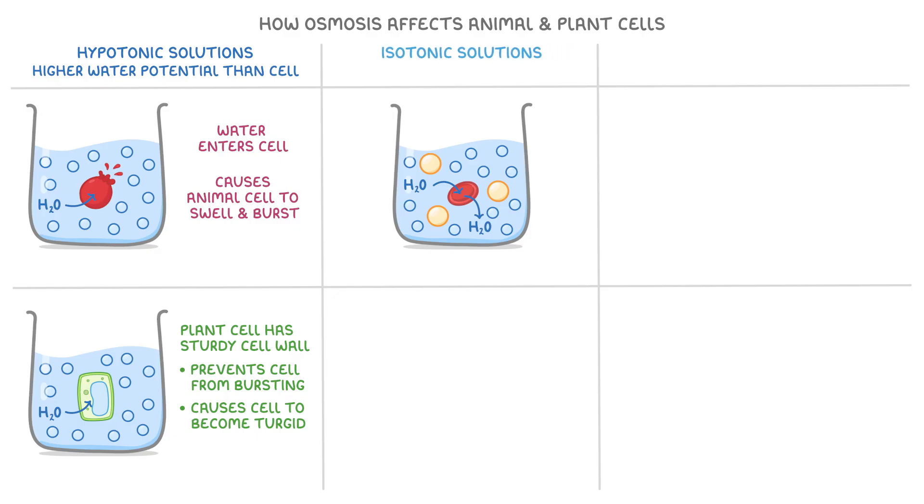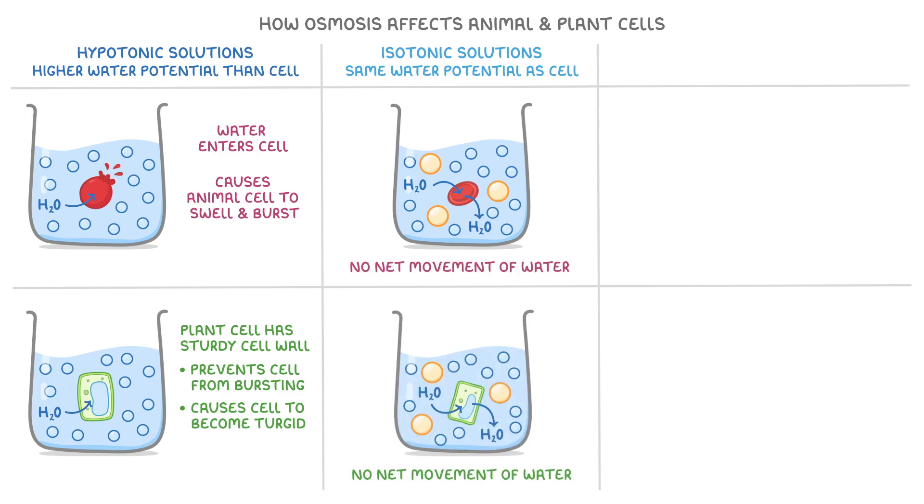Moving on to isotonic solutions, these have the same water potential as the cell, which means for both animal and plant cells there's no net movement of water. As a result, both animal and plant cells maintain their size and shape when put into isotonic solutions.